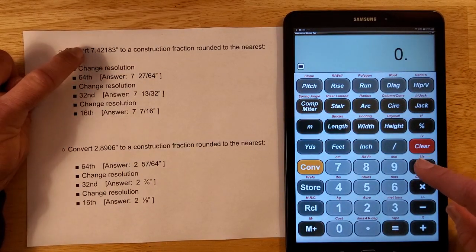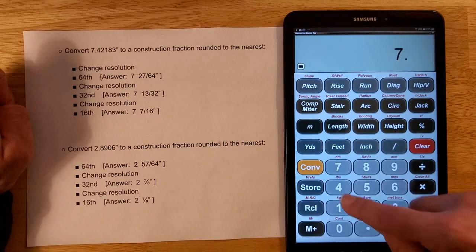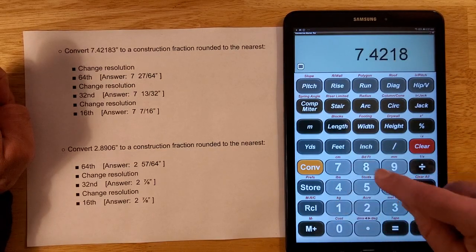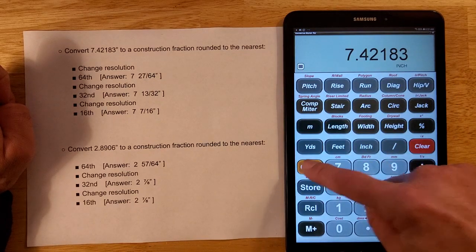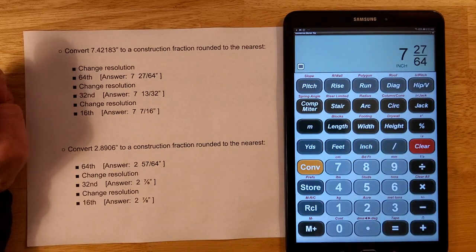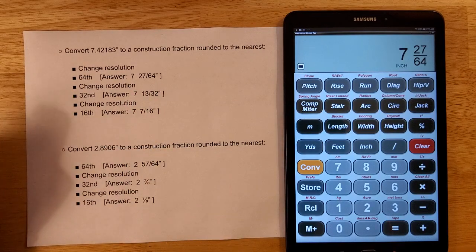So now I'm going to put in my decimal, 7.42183. Put it in as inches. And then I'm going to do convert inch. And you see how I get seven and twenty-seven sixty-fourths.